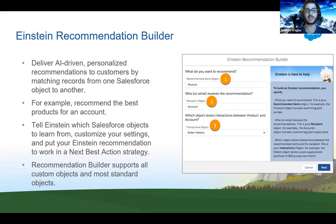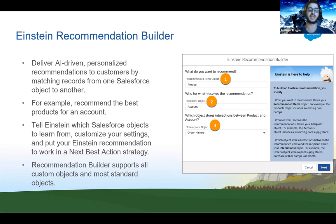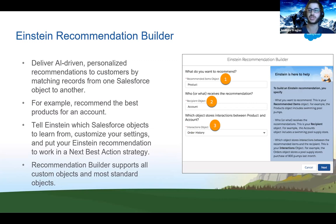For example, recommend the best product for an account. You can tell Einstein which Salesforce objects to learn from by customizing your settings, and then put your Einstein Recommendation to work in the next best action strategy. Recommendation Builder supports all custom objects and most standard objects, so be sure to review the release highlights to see which objects it applies to.